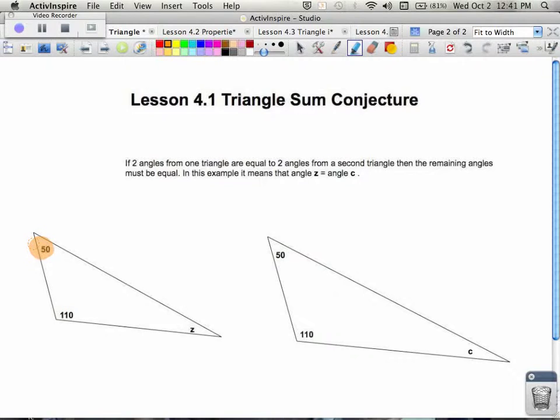the top angle of 50 degrees matches up with the top angle of 50 degrees, and the bottom left angle is 110 degrees. That means that my remaining angles, whatever they are, angle z and angle c, must be equal to each other. We could actually find out what that total sum would be